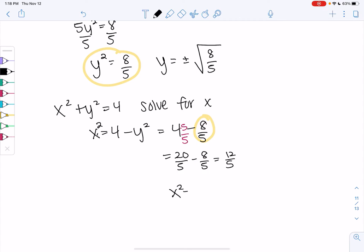Sorry, not x. And so it gives us two solutions. x equals plus or minus square root 12 fifths.